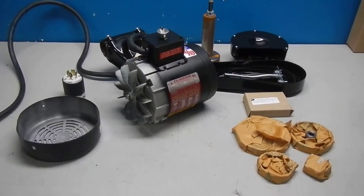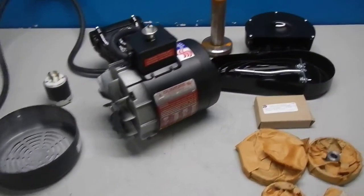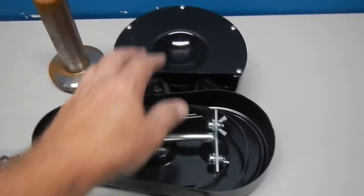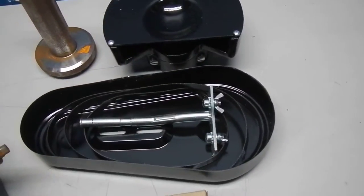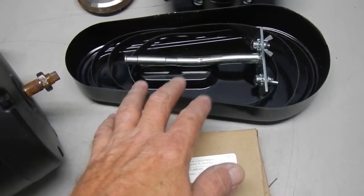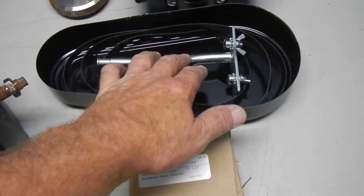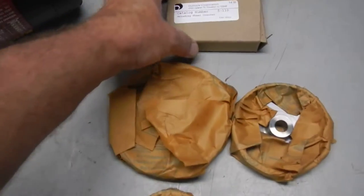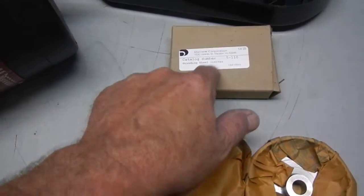Here we have a Dewbar 57 series tool post grinder. This includes the motor, the mount, the grinding wheel, three belts, the belt guard, four pulleys, and the grinding wheel dresser.